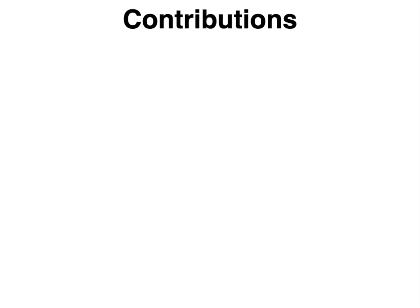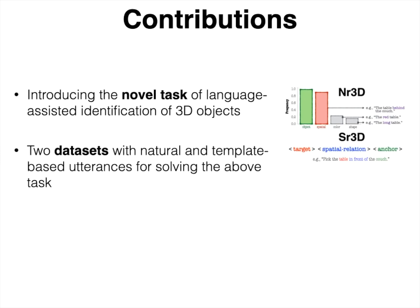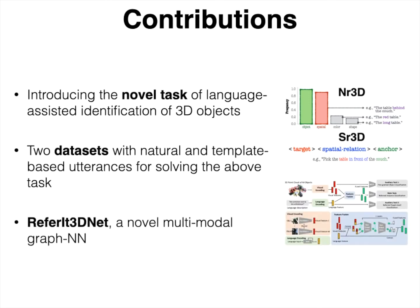The contributions of this work are threefold. First, we introduce the novel task of identifying a 3D object in a real-world scene given a description of it in natural language. Second, to solve this task we create two physiolinguistic datasets with discriminative utterances describing objects in 3D scenes. And last, we develop a multi-modal deep neural network that comprehends references made about these objects in order to identify them.